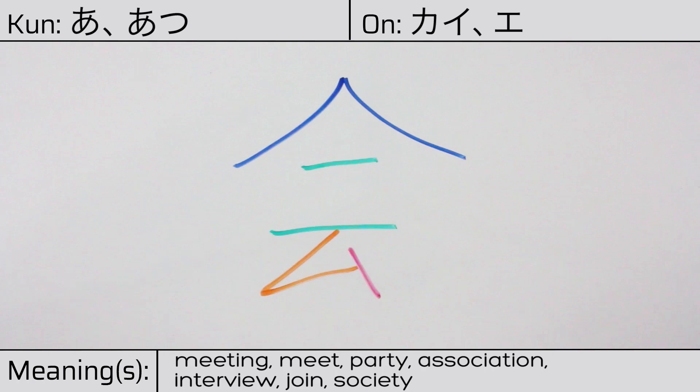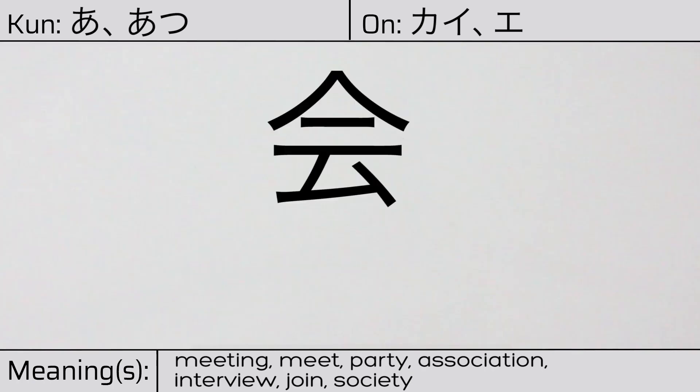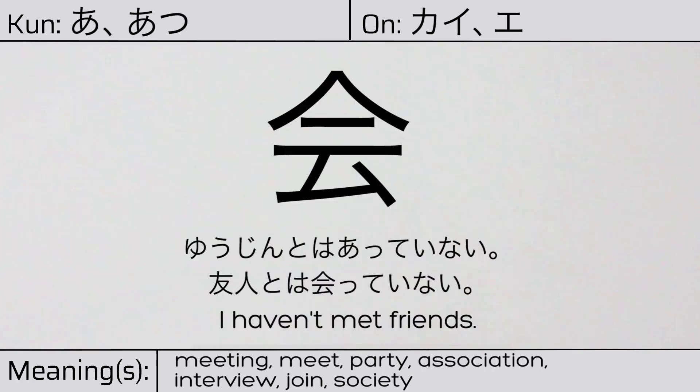You can remember this Kanji by the following hint: Two individuals under the same roof. Our example sentence is: yujiin to wa atte inai. I haven't met my friends.